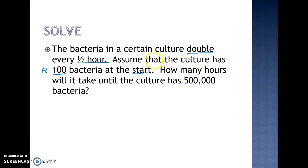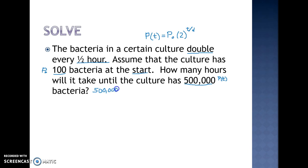I'm going to start by writing down my model. Because it's a doubling problem, the keyword is: P of t equals starting population times 2 — that's the base for doubling — with an exponent of t divided by d, where d is the doubling time. Filling in the numbers: 500,000 equals 100 times 2 to the exponent of t divided by the doubling time of 0.5.